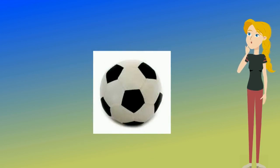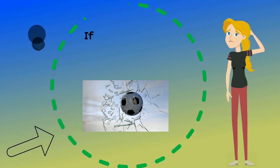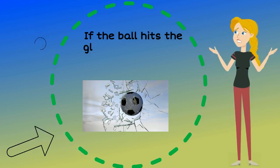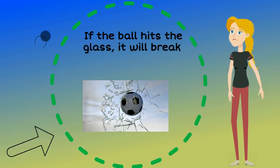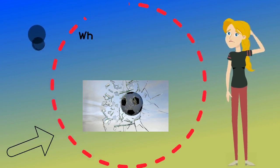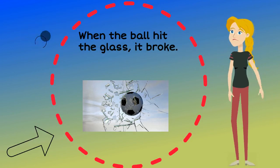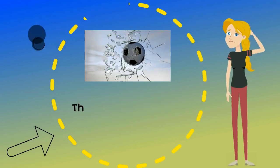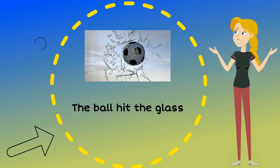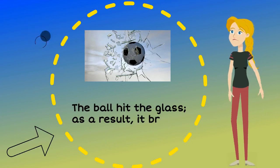What do you think will happen if this ball hits the glass window? If the ball hits the glass window, it will break. We can also say, when the ball hit the glass, it broke. Or, the ball hit the glass, as a result, it broke.